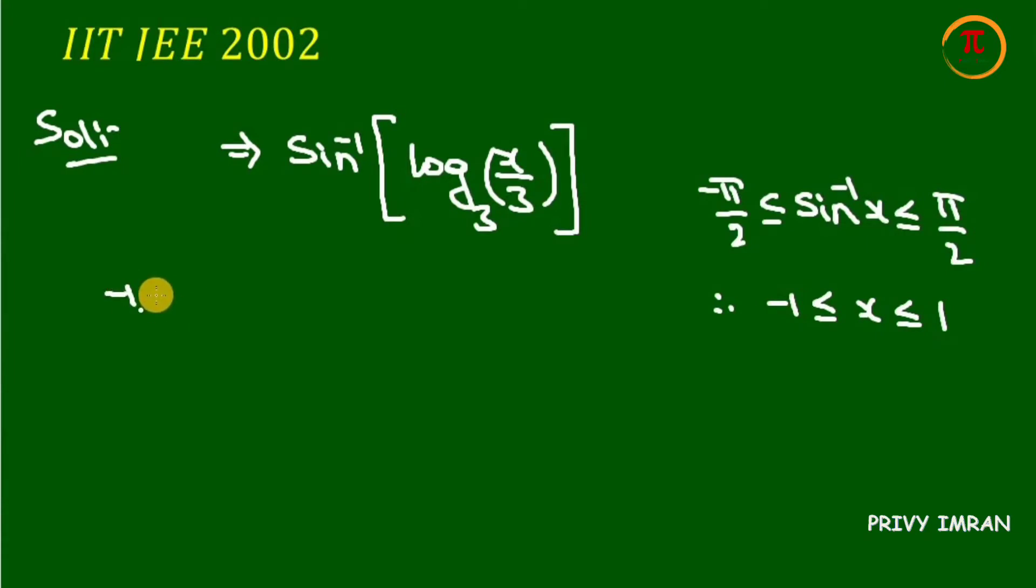Then log base 3 of x divided by 3 lies between minus 1 to plus 1. Now let me apply anti-logarithm on both sides.